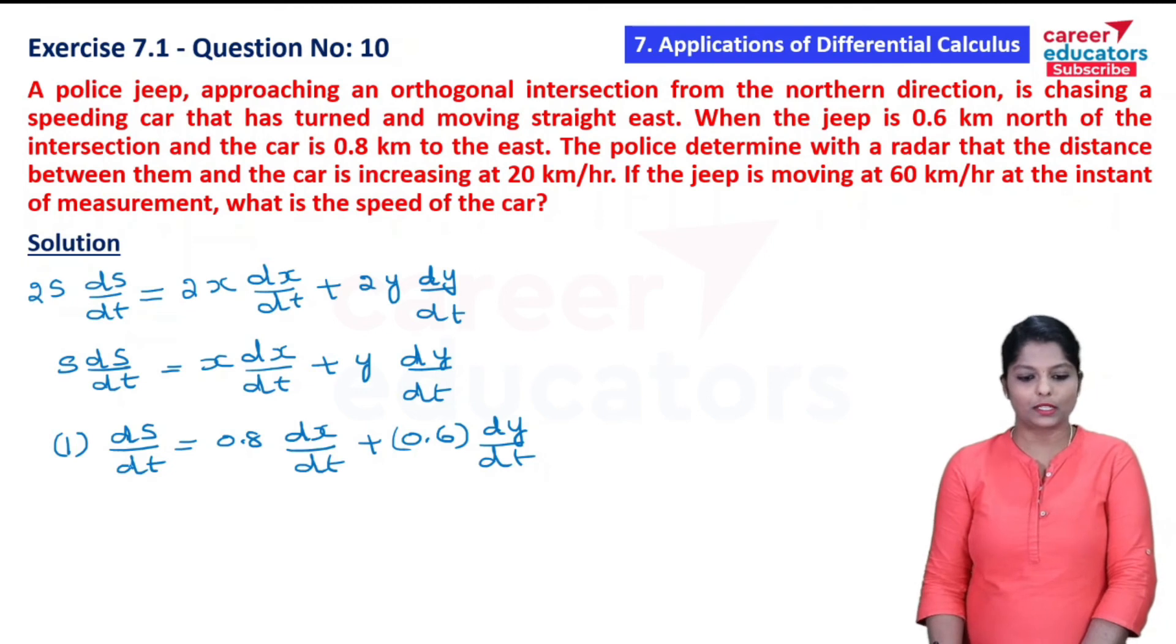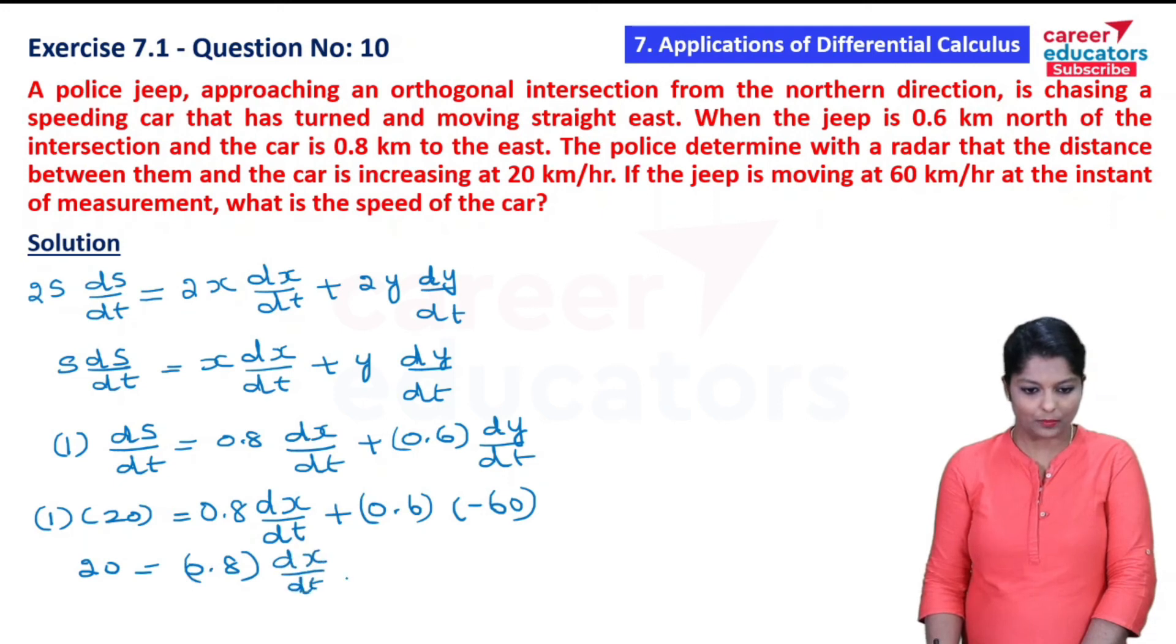Substituting: S equals 1, ds by dt equals 20, x equals 0.8, y equals 0.6, and dy by dt equals minus 60. So: 1 times 20 equal to 0.8 times dx by dt plus 0.6 times minus 60. That gives 20 equal to 0.8 dx by dt minus 36.